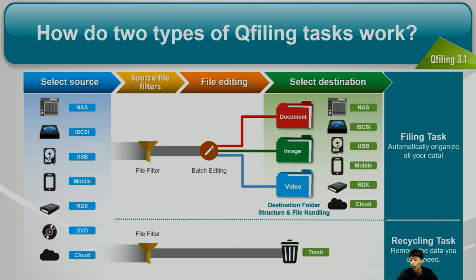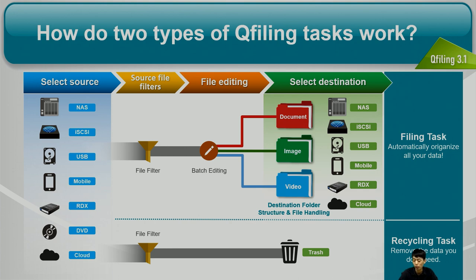There are two types of QFiling tasks: filing tasks and recycling tasks. In QFiling, we support lots of storage as a source, including the local NAS, external device, and also the public cloud. You can select any one of them as a source. You can also set up a filter to filter the data, and after filtering, we can use the editing module in the filing task — so at the same time you're filing the file, you can also edit them. At the end, you select the destination and set up the destination folder structure so that the data will be filed to the specific folder you set up.